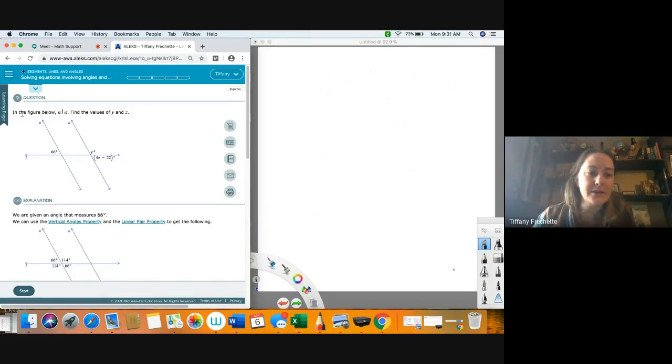So down here it says in the figure below, N is parallel to O. So what that means is line N is parallel to line O. These two lines are parallel to each other. Find the values of Y and Z.